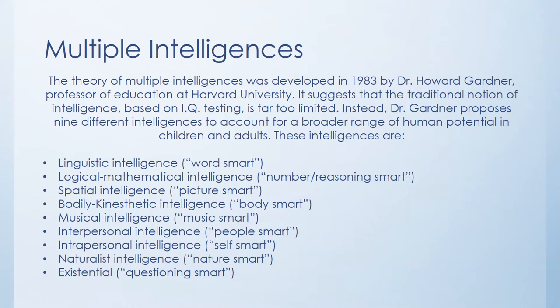Instead, Dr. Gardner proposes nine different intelligences to account for a broader range of human potential in children and adults. Linguistic intelligence — the word smart — refers to people who possess a turn of phrase and likely learn auditorially or visually; these are the folks who can stand up in front of a crowd and deliver a speech with impressive command of language. Next are logical-mathematical intelligence — our reasoners, logicians, and mathematicians — people with great skill in analyzing something.